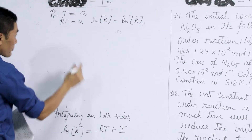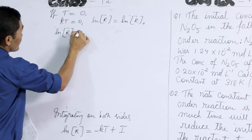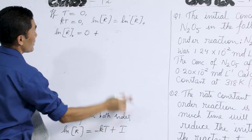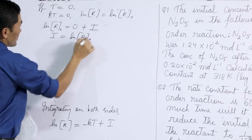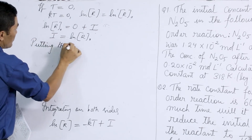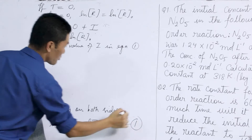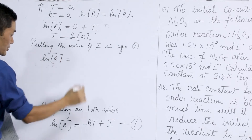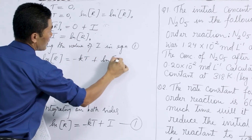Putting this in the equation, in place of R we write R₀, equal to minus k·t which has become 0, plus I. Therefore I becomes equal to log R₀. Then putting the value of I in equation 1, we get: log R equal to minus kt plus I, which is equal to log R₀.